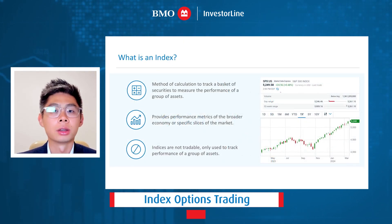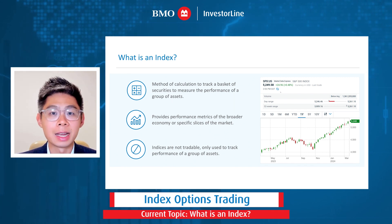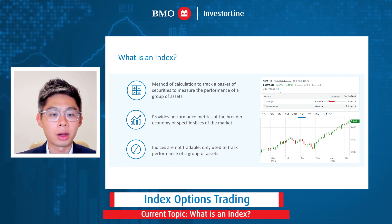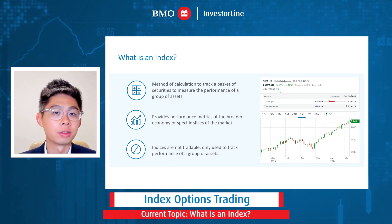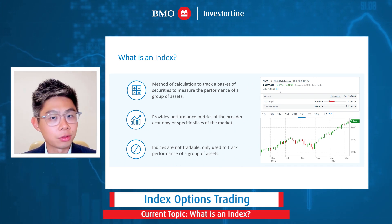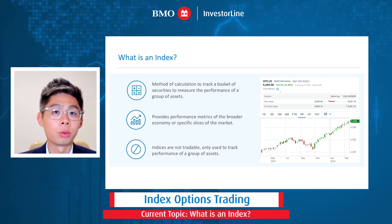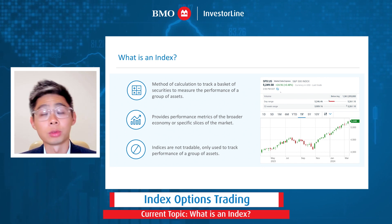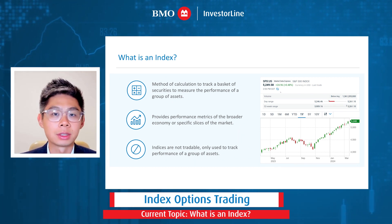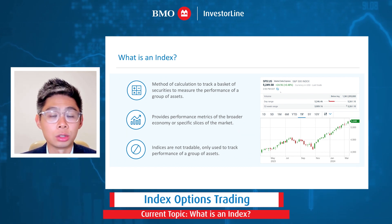Let's kick this off by taking a look at what is an index. An index is simply a calculation — a method to calculate and track a basket of securities to measure the performance of a group of assets. Many of you may be familiar with popular indices such as the S&P 500, which tracks the broad-based U.S. equity markets, or the NASDAQ 100 or the Russell 2000, which track technology-focused or small-cap stocks. There are thousands of indices that track different slices of the economy, but they provide you a view of how specific slices of the market are doing from a price perspective.